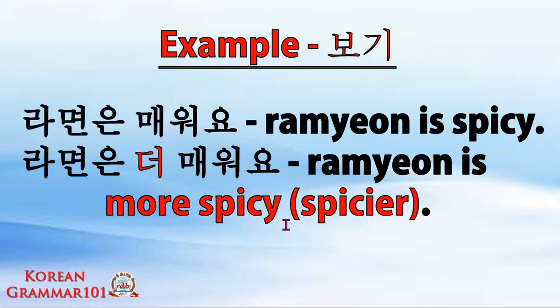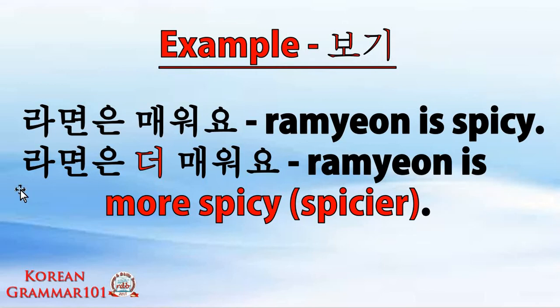In English grammar, this becomes 'spicier', so the sentence means 'ramyeon is spicier.' Take notice that we don't put here anything that we are comparing against — we will have that in our later studies.